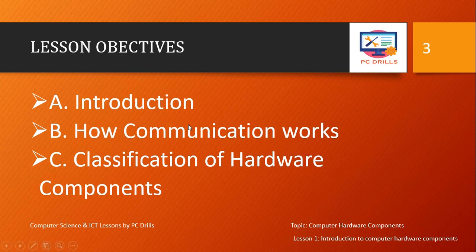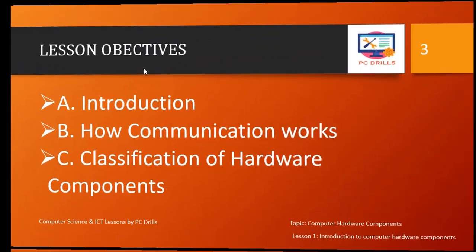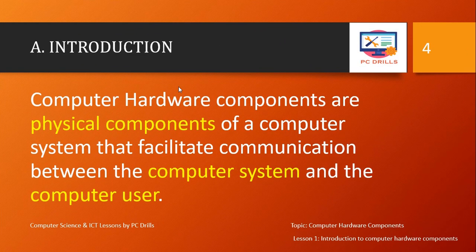We are looking at an introduction to computer hardware components. Computer hardware components are physical components of a computer system that facilitate communication between the computer system and the computer user. The key word here is physical, meaning you can see them and you can touch them. For example, a screen, a mouse, a speaker — all those components you can see and touch, and those are computer hardware components.